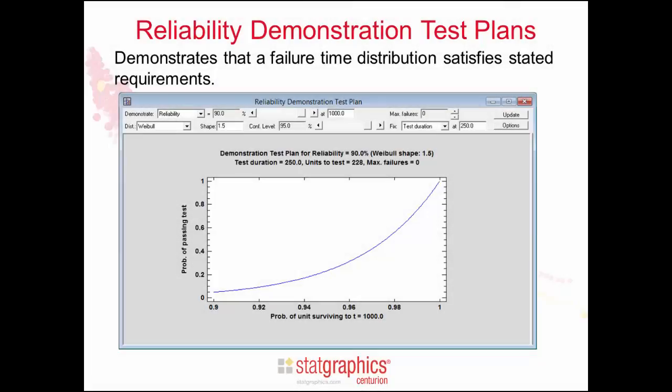The reliability demonstration test plans are used to show that a failure time distribution satisfies stated requirements. Given a requirement on the reliability of a process, the procedure determines the number of items that need to be tested, the required duration of the test, and the maximum number of failures that would be allowed.